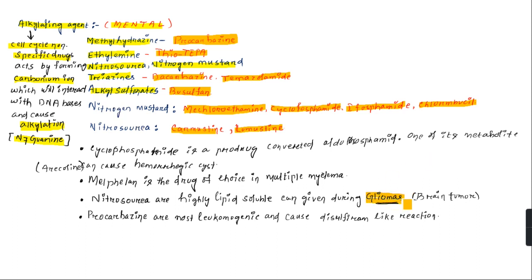In nitrogen mustards, cyclophosphamide is an important drug converted to aldophosphamide for its action. One of its metabolites, acrolein, is produced and can cause hemorrhagic cystitis. To prevent hemorrhagic cystitis, we have to give plenty of water to the patient.